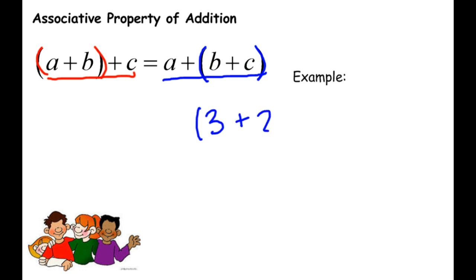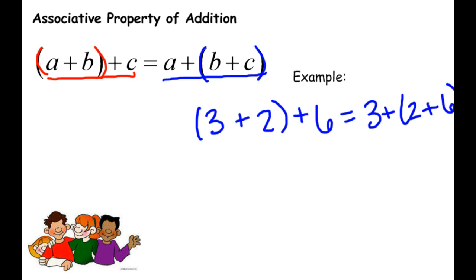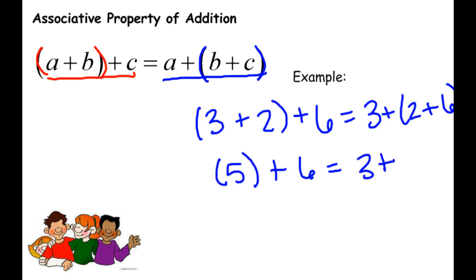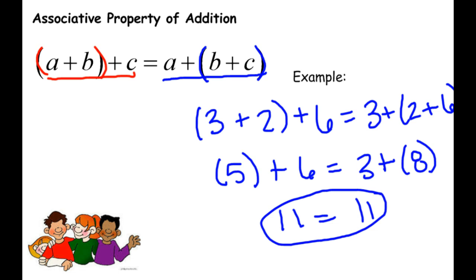Here's a numerical example: (3 plus 2) plus 6 equals 3 plus (2 plus 6). Using order of operations, 3 plus 2 is 5, so the left side becomes 5 plus 6. On the right side, 2 plus 6 is 8, so it becomes 3 plus 8. Even though they look like completely different addition problems at that step, 5 plus 6 equals 11 and 3 plus 8 also equals 11 — same answer.